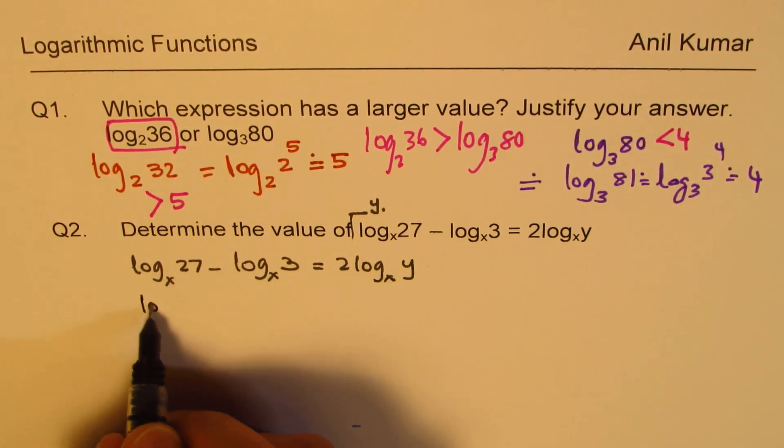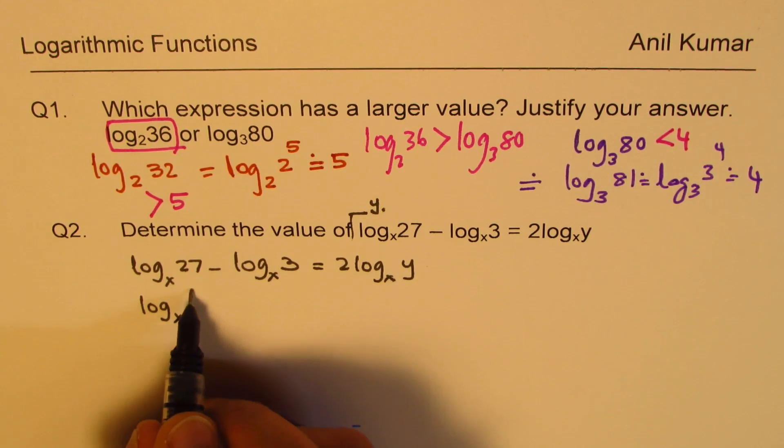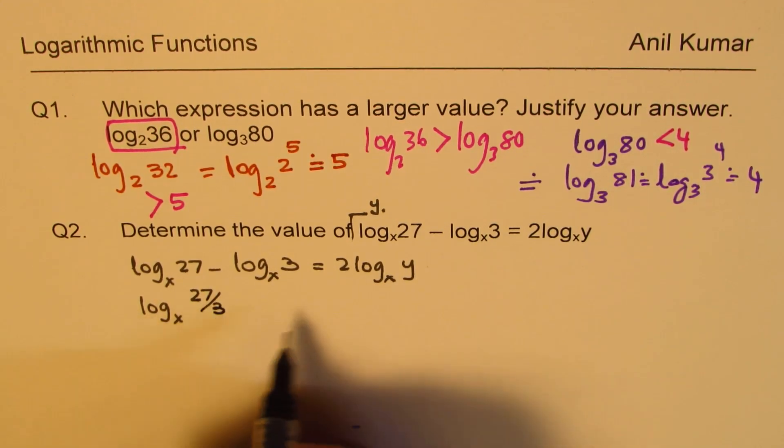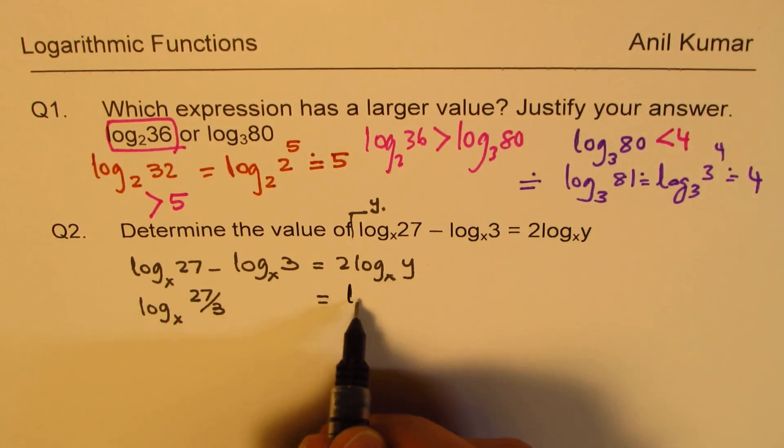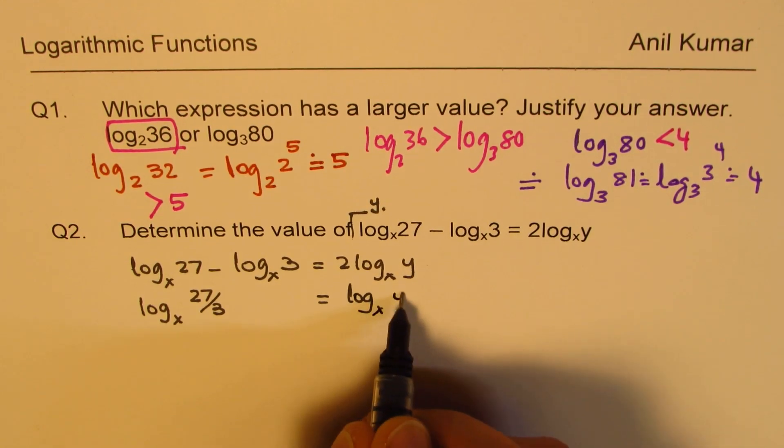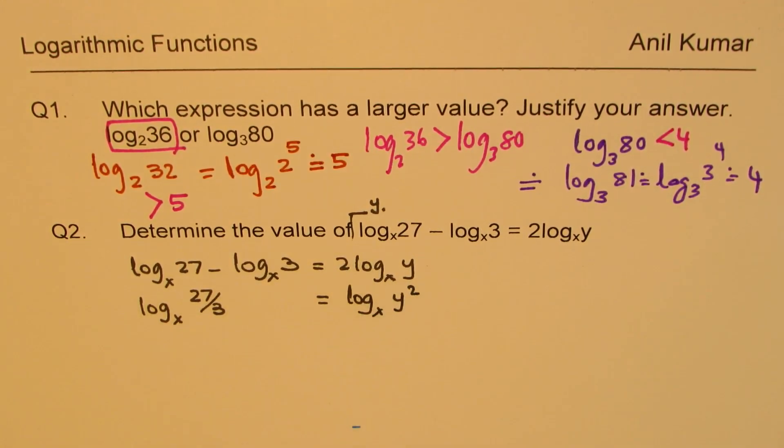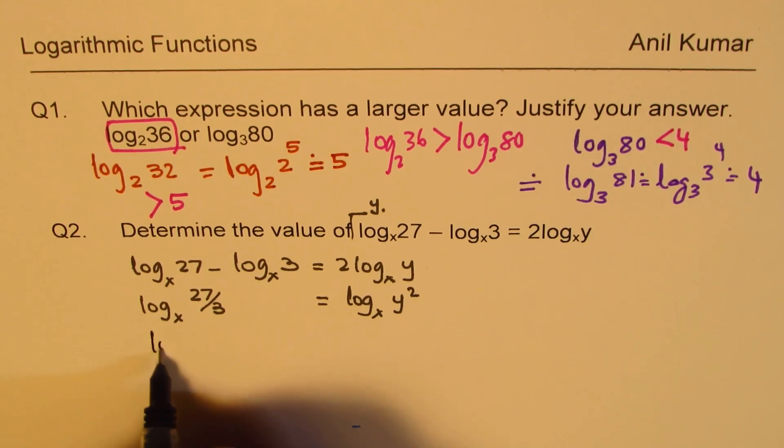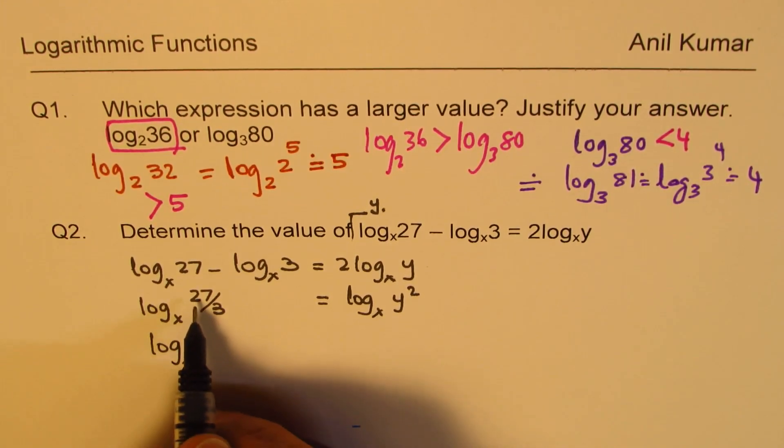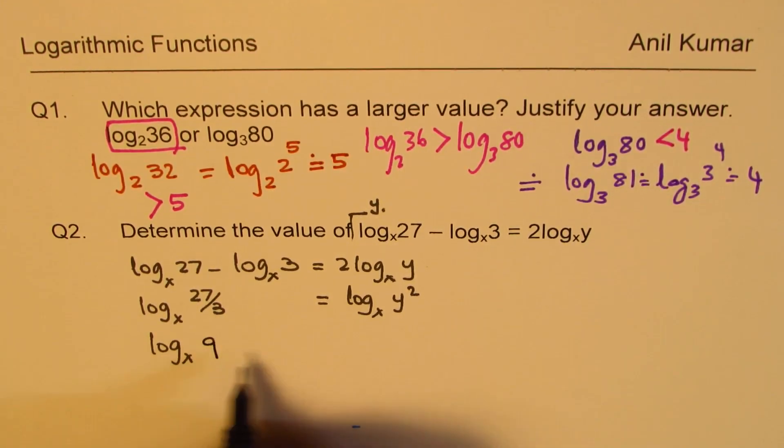So on the left side, you could write this as log to the base x of 27 over 3. On the right side, you could write this as log to the base x of y squared using the power rule.